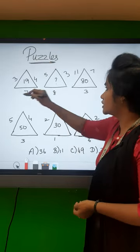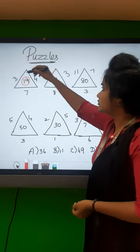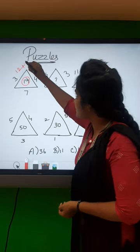How do you think 19 is like this? Three into four is like twelve. Twelve is like nineteen. Seven is like plus seven.